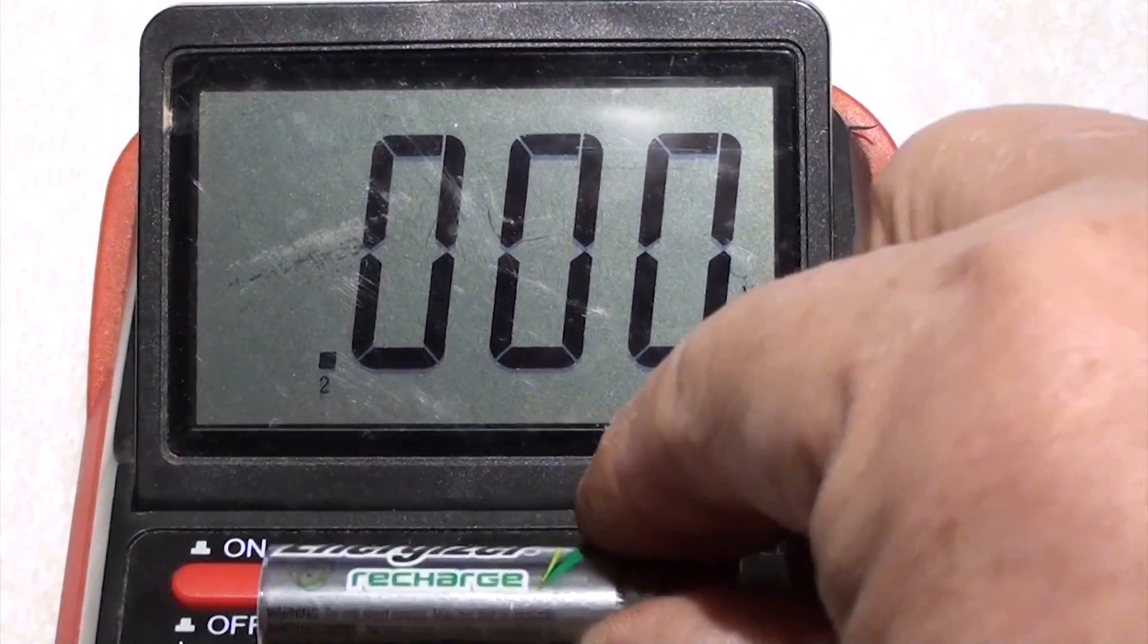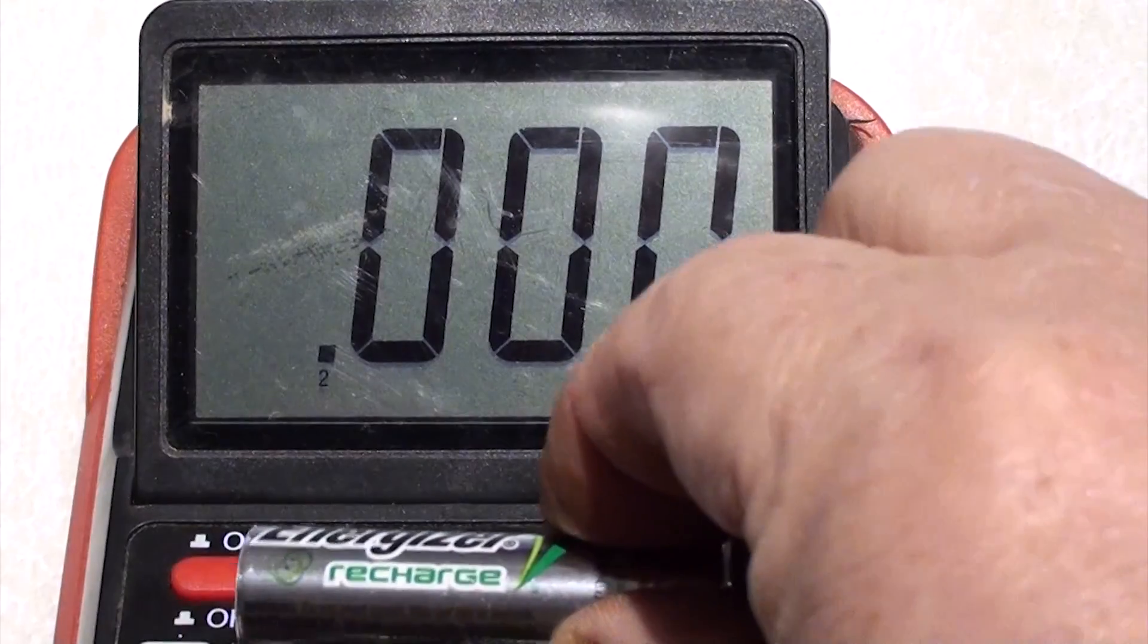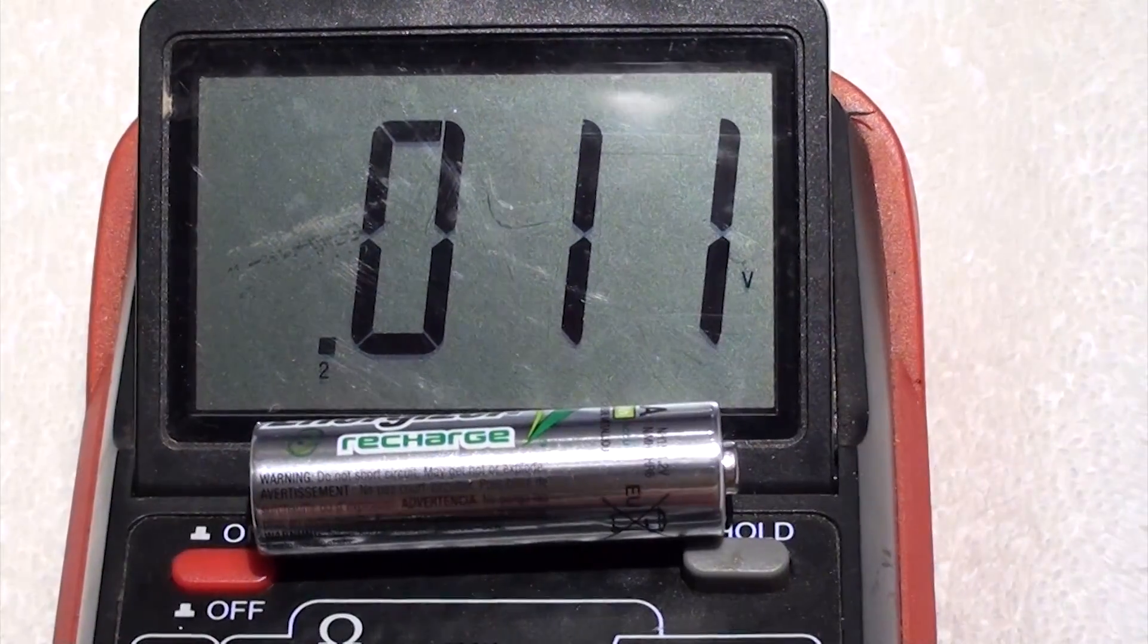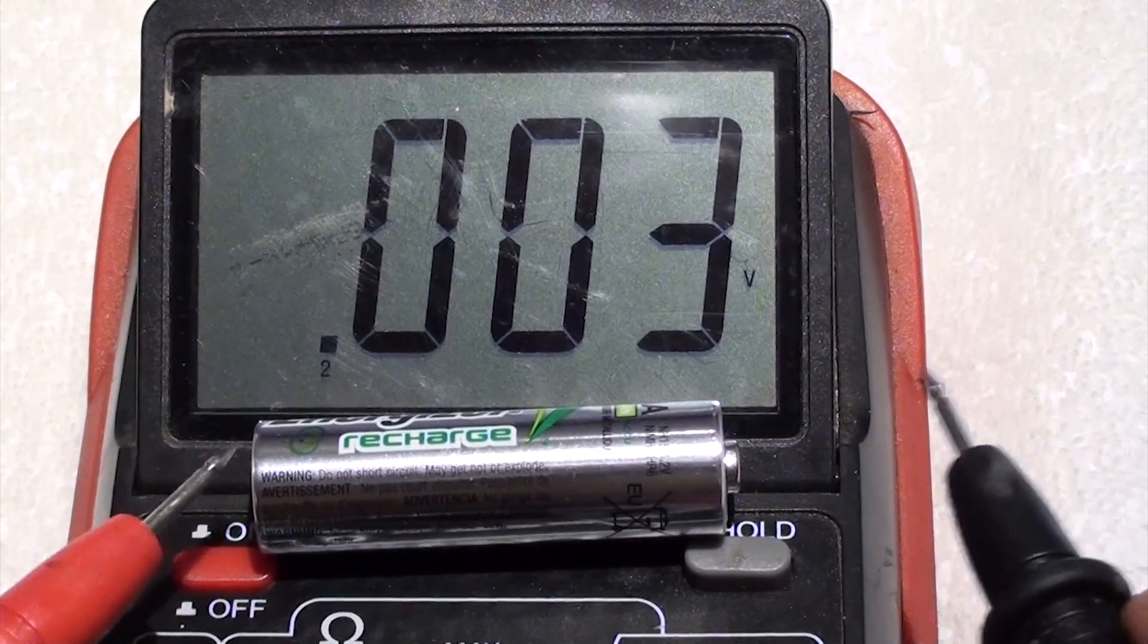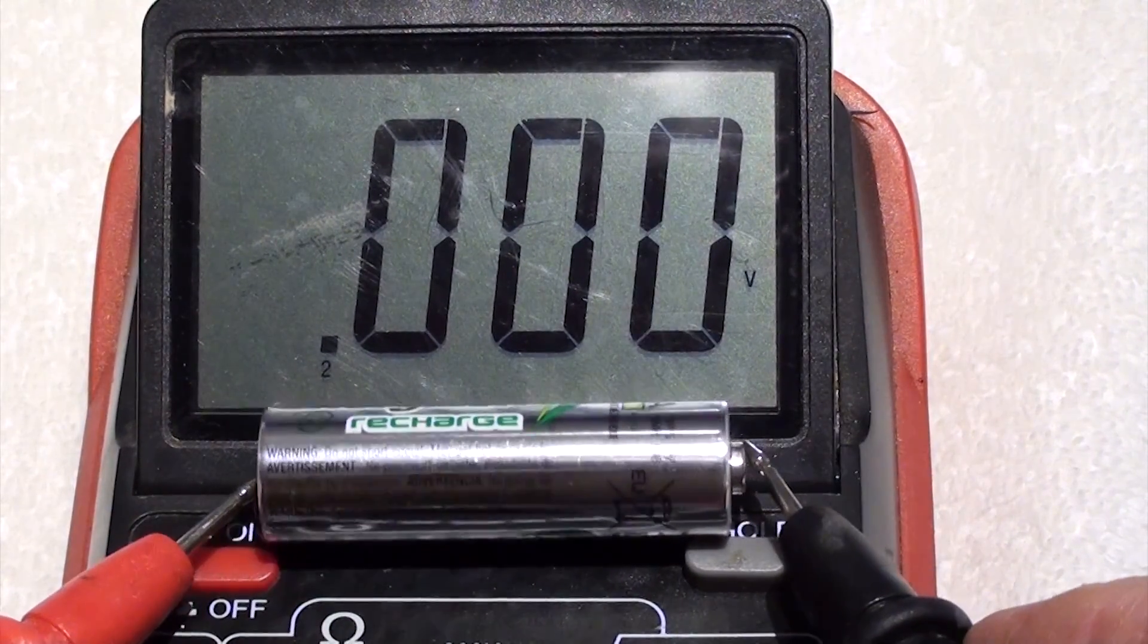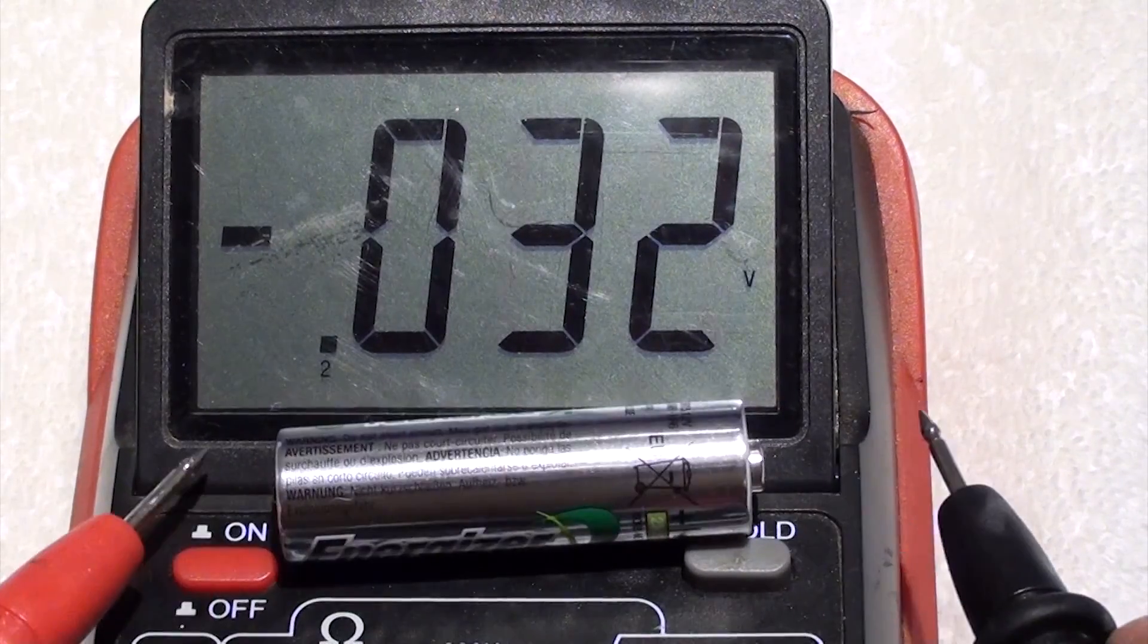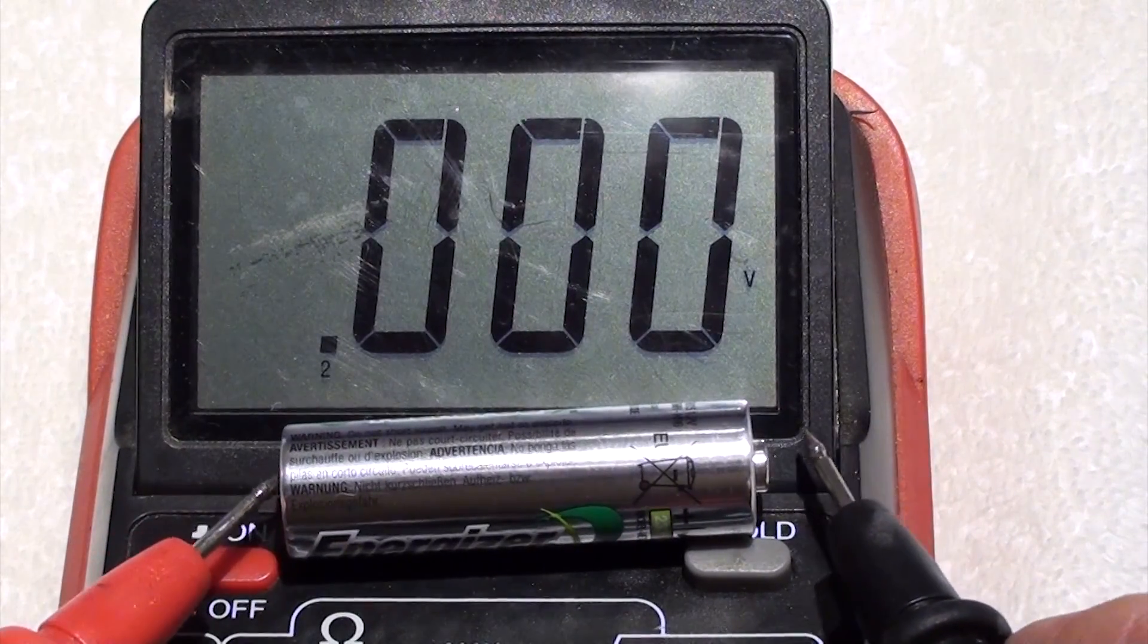Take the battery and put a probe on each end and see what the reading is. Looks like we have 0.68 volts, so this is the bad one. These batteries are supposed to be 1.5 volts.